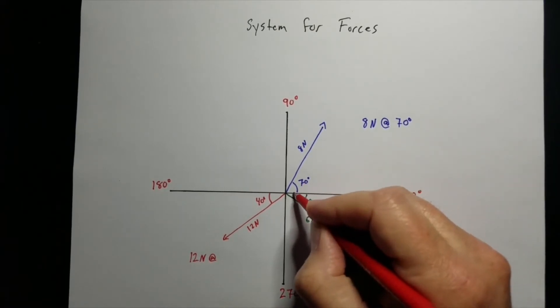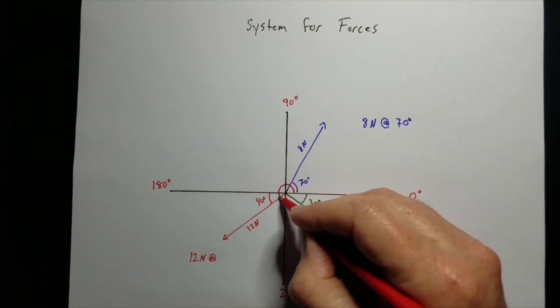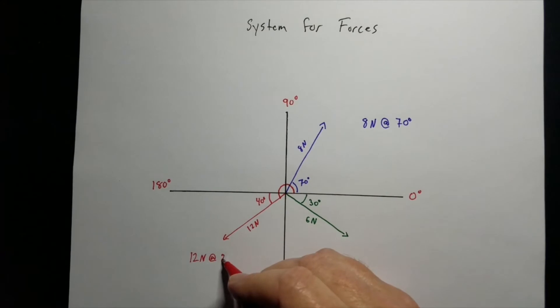But we've got to go from here all the way around to that one. So that's 90, 180 degrees plus another 40. So 180 plus 40 gives us 220 degrees. So that would be 12 newtons at 220 degrees.